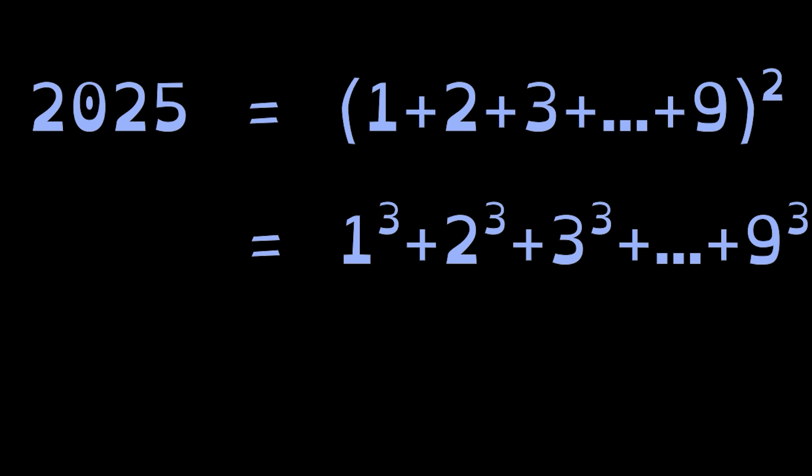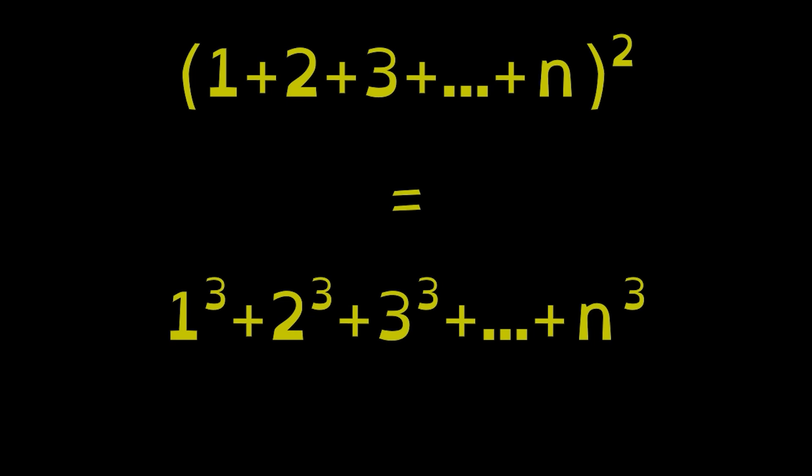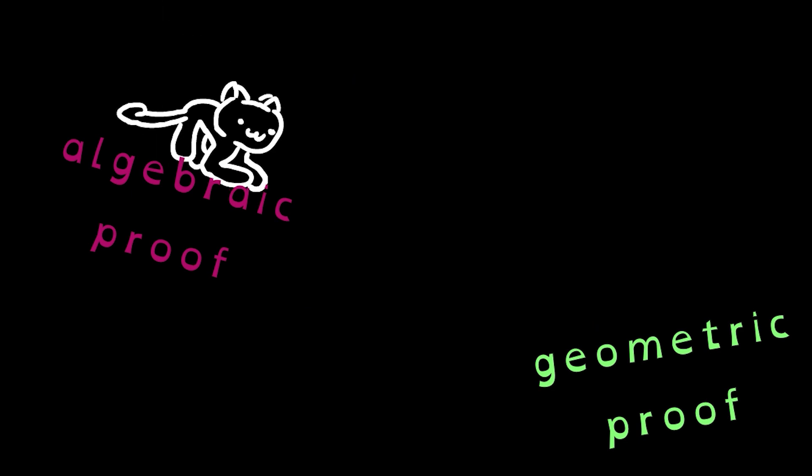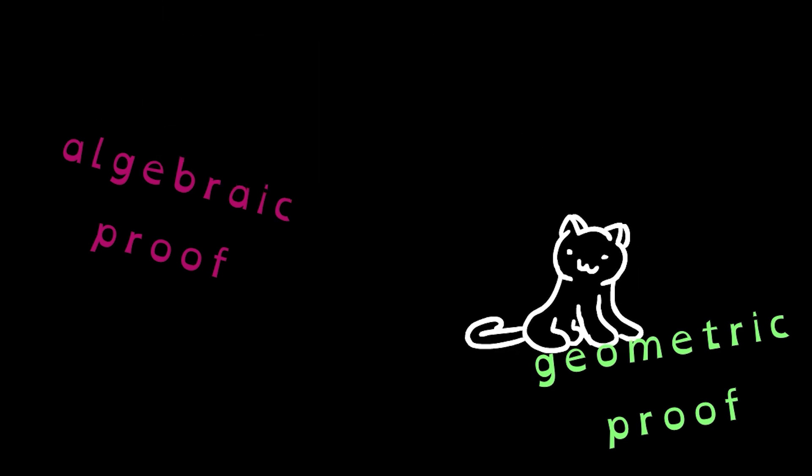And as it turns out, this identity, where you add all the numbers up to 9, then square it, and that equals the sum of the cubes up to 9, works for any number. It's known as Nicomachus' theorem, and in this video I'll provide two proofs, an algebraic proof and a geometric proof.